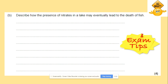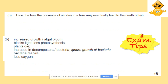Here is an exam question on eutrophication: describe how the presence of nitrates in a lake might lead to the death of fish. The key words from our sorting activity are: increase in algal bloom; light becomes a limiting factor; less photosynthesis, so plants die; more decomposers are needed to break down the dead plants; decomposers use oxygen; so an increase in bacteria causes oxygen levels to fall, leading to fish death.